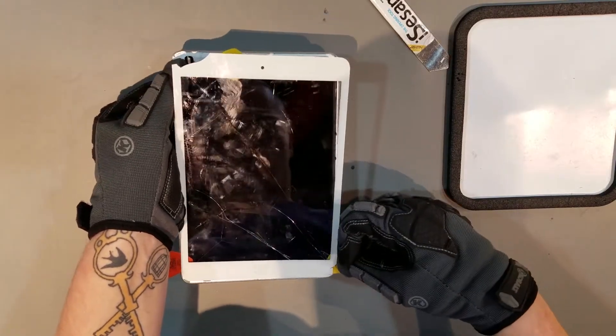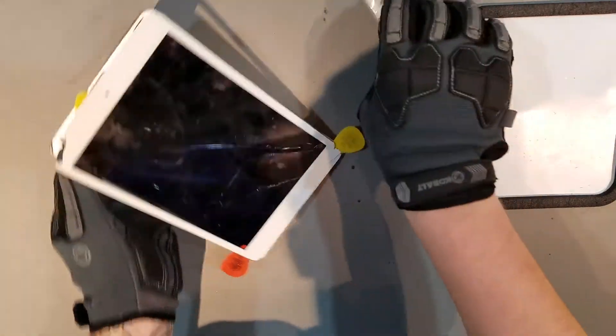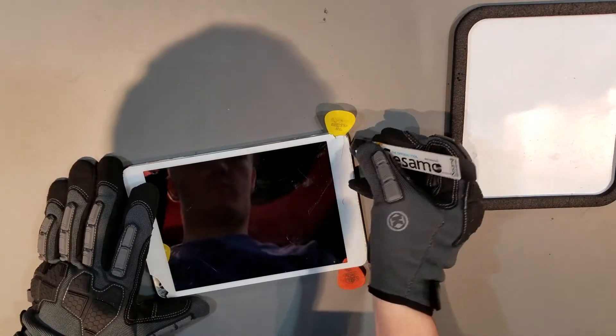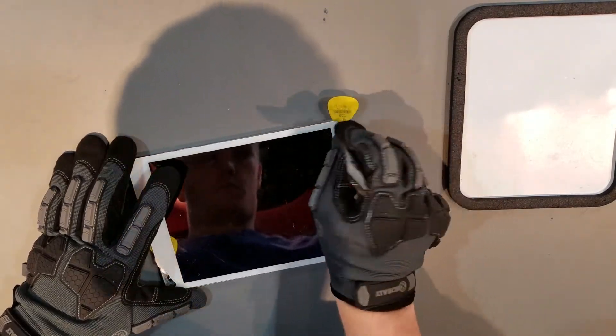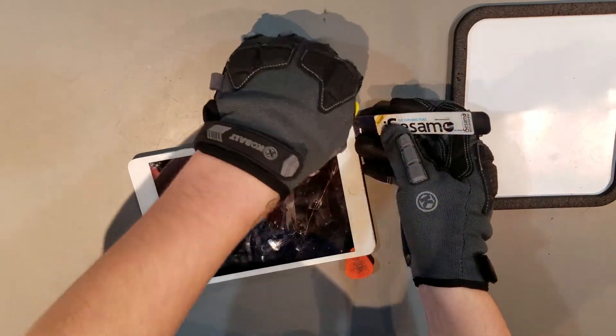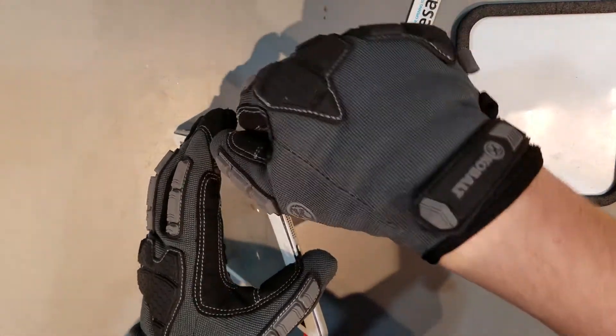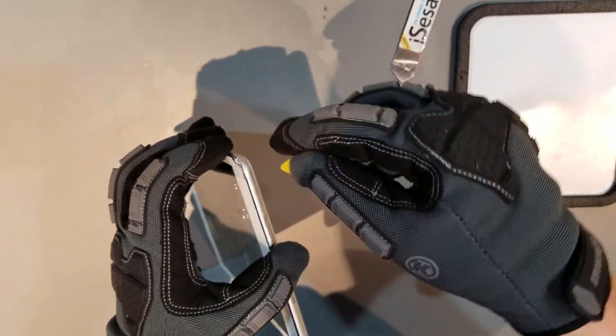When prying the bottom away from the iPad, you'll want to be very careful as there's a wifi antenna flex that can be easily damaged. Having a lot of patience and being very careful in this area can reduce the possibility of the flex being severed. There are two separate antennas for this flex, so you will want to be careful on both sides of the home button when prying the glass away.